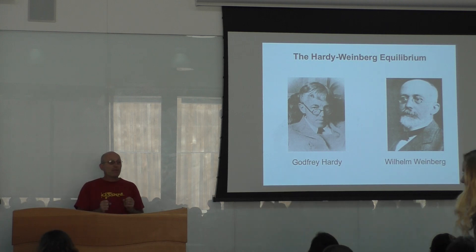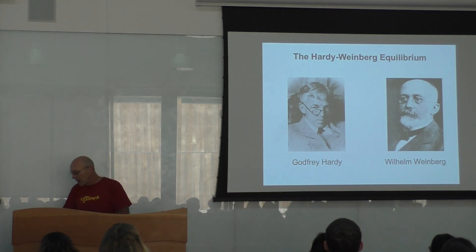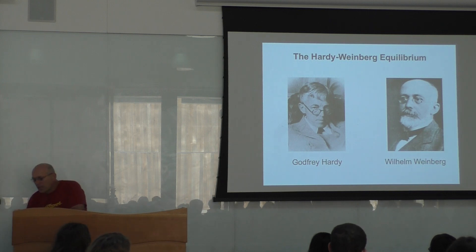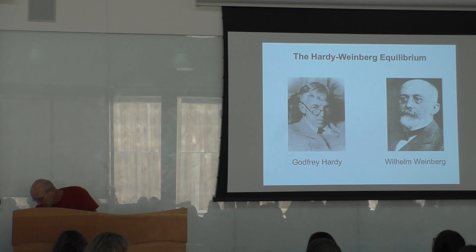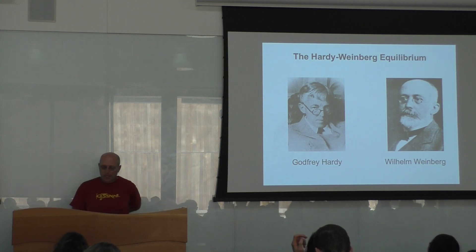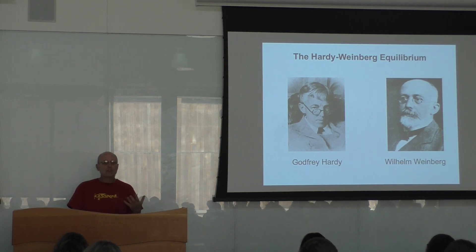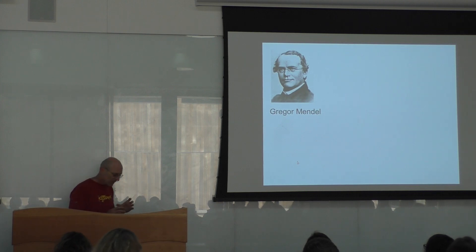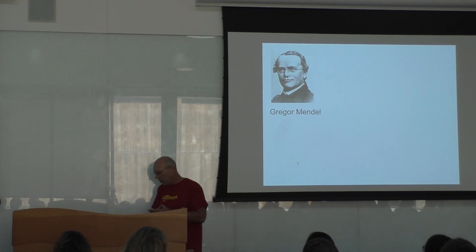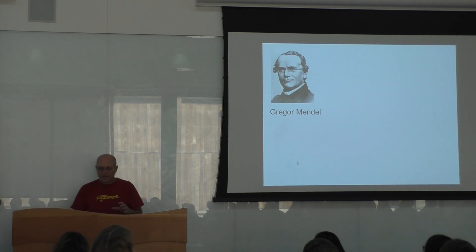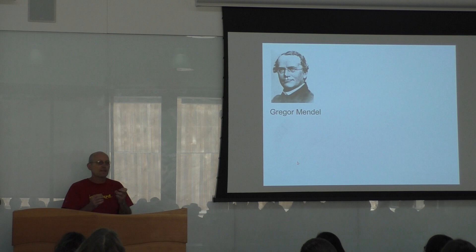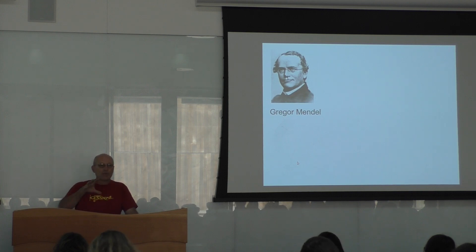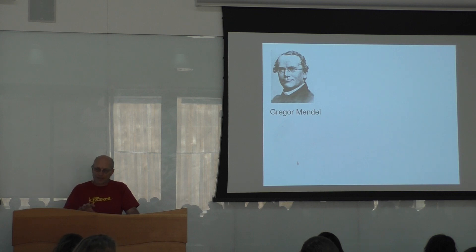Hardy-Weinberg equilibrium is named after two scientists, Hardy and Weinberg, who discovered the same thing independently — a little bit like Wallace and Darwin. Hardy was British, Weinberg was German, but they worked on the same thing independently. Gregor Mendel had done some work on peas, establishing frequencies of various phenotypes, and we are now trying to formalize how you can go from one generation to the next and understand how these changes are going to shape populations over time. That's essentially the goal.